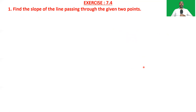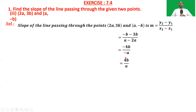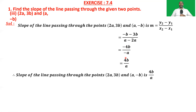The third problem: find the slope of the line passing through (2a, 3b) and (a, -b). Slope = (y2 - y1)/(x2 - x1) = (-b - 3b)/(a - 2a) = -4b/(-a). By cancelling the minus signs in numerator and denominator, we get 4b/a. So the slope of the line passing through (2a, 3b) and (a, -b) is 4b/a.